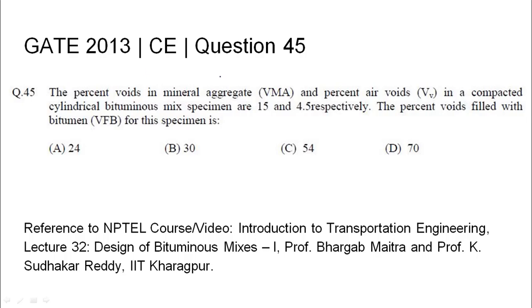GATE 2013 Civil Engineering Question 45: The percent voids in mineral aggregate (VMA) and percent air voids (VV) in a compacted cylindrical bituminous mix specimen are 15 and 4.5 respectively. The percent voids filled with bitumen (VFB) for this specimen is — options given are A: 24, B: 30, C: 54, and D: 70.